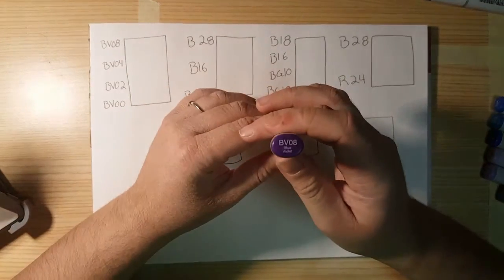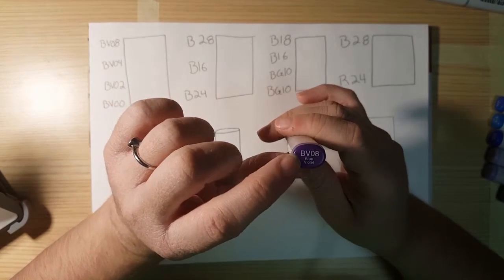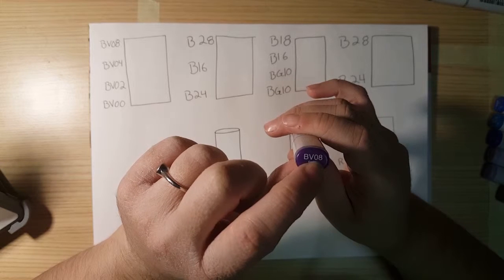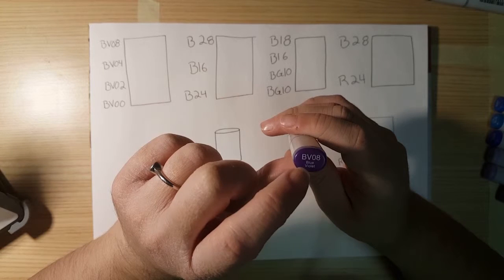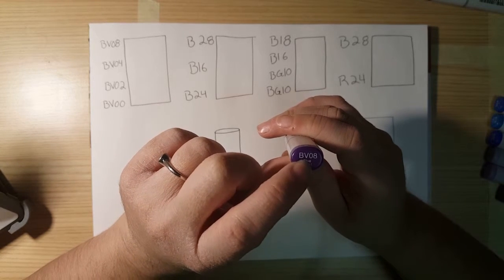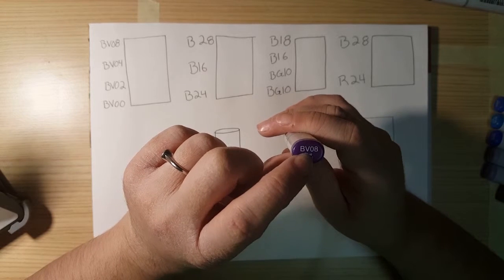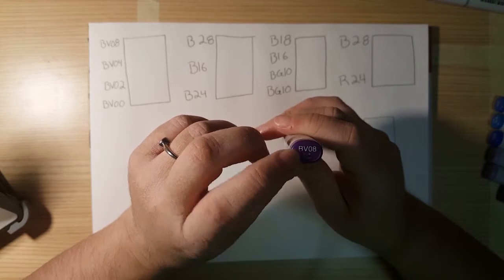So first off, I'm going to show you on the lid of each Copic, there's usually one or two letters, and at minimum two numbers. So the letters are referring to the color family, so this one would be blue-violet. Those are pretty self-explanatory. BG is blue-green, B is blue, RY is red-yellow, and so on.